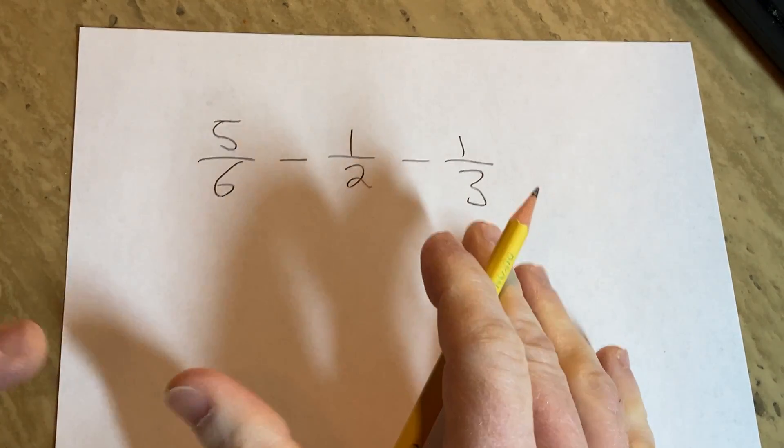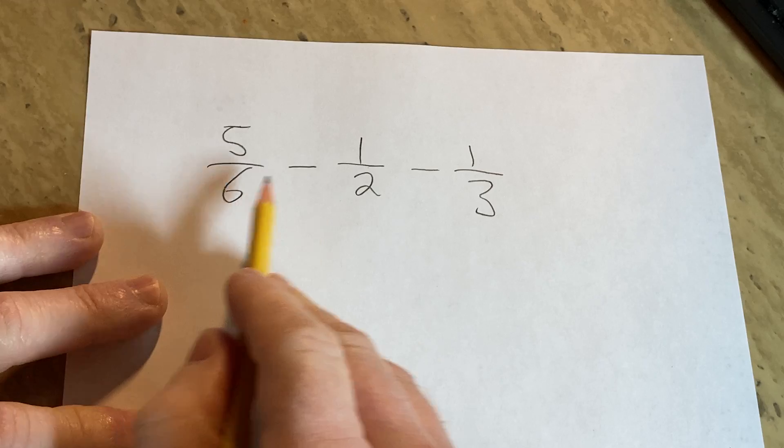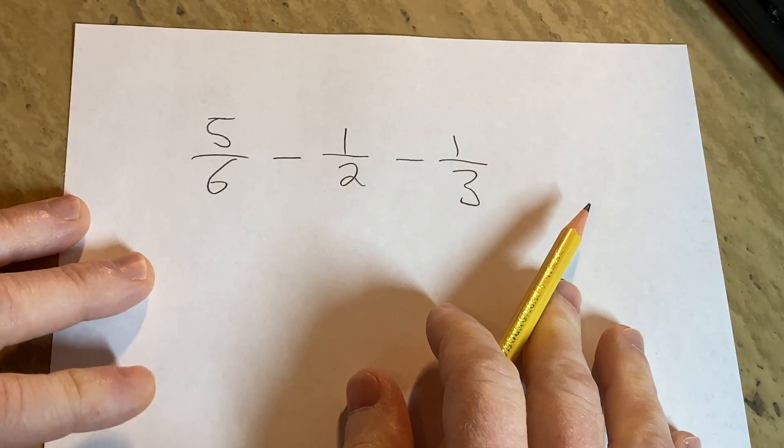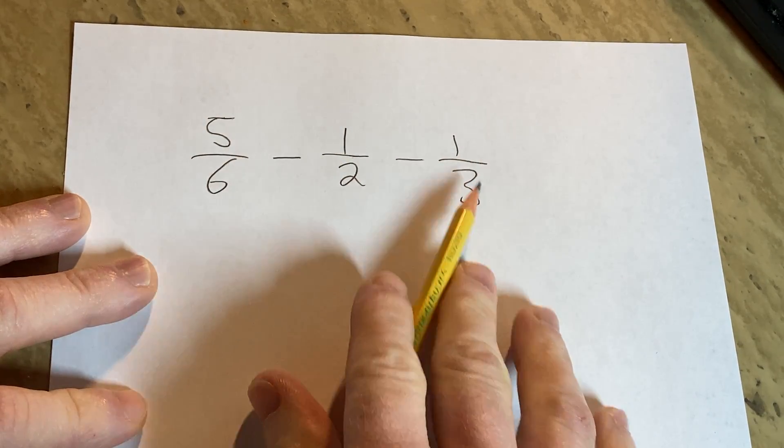We have three fractions and we have some subtractions going on. So 5 over 6 minus 1 over 2 minus 1 over 3. So the first thing we're going to do is find a common denominator for these fractions.